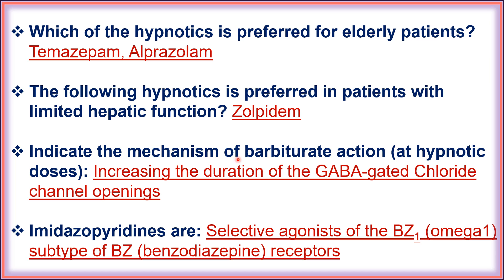The mechanism of barbiturate action at hypnotic dose: barbiturates increase the duration of GABA-gated chloride channel opening, leading to hyperpolarization. Imidazopyridines are selective agonists of the benzodiazepine omega-1 subtype of benzodiazepine receptors, meaning they are benzodiazepine receptor agonists.